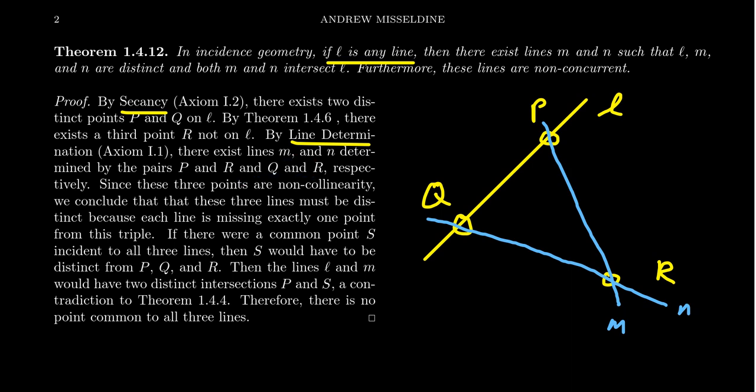Call that point S. So let's say that S is on the intersection of L with M with N. Is there such a point? Well, if there was a common point S incident to all three lines, then that would mean that S would have to be distinct from P, Q and R.